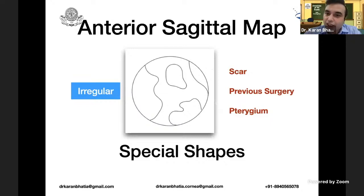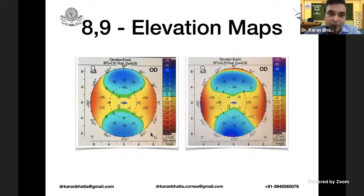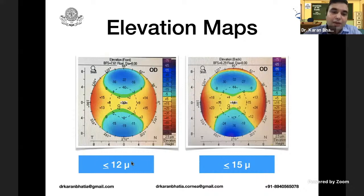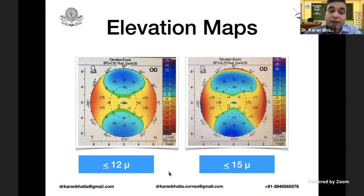Coming to the elevation maps — you have the anterior and posterior elevation maps. In these, you can see a central island or an hourglass pattern. For the anterior elevation map, the elevation should ideally be less than 12 microns. For the posterior elevation map, it should be less than 15 microns. Values beyond 12 on anterior and beyond 15 on posterior elevation are suspicious. Particularly, if anterior elevation is more than 15 and posterior more than 18, this is in the lines of keratoconus.